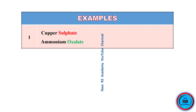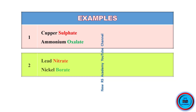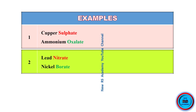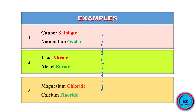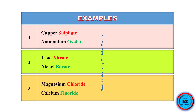Here I will give some examples of inorganic mixtures. The first one is copper sulfate and ammonium oxalate. The second one is lead nitrate and nickel borate. The third one is magnesium chloride and calcium fluoride. Red color indicates simple acid radicals, green color indicates interfering acid radicals, and black color indicates the two cations. Each mixture contains two cations.